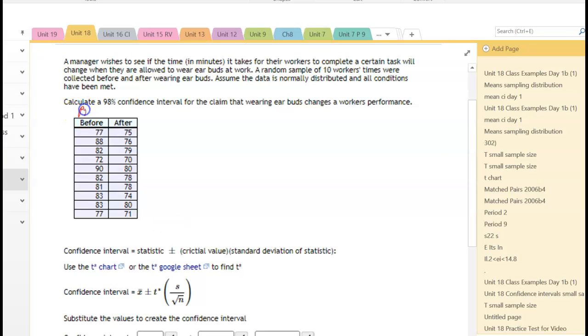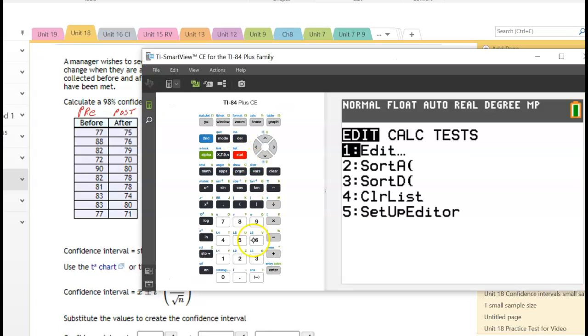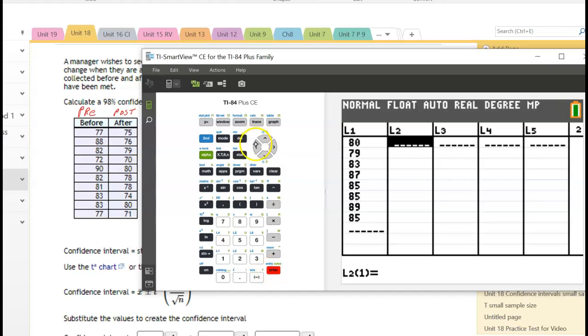Sometimes we call this the pre-test and the post-test. So we have a before and after. We're going to grab our calculator and press stat, edit, and we're going to type the data into list one and list two. So go ahead and type in the data into list one and list two.